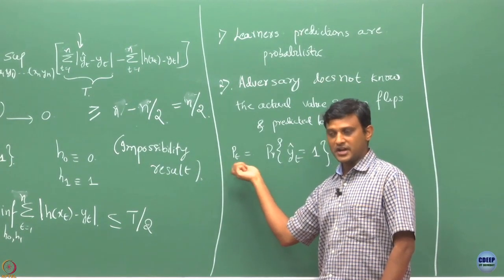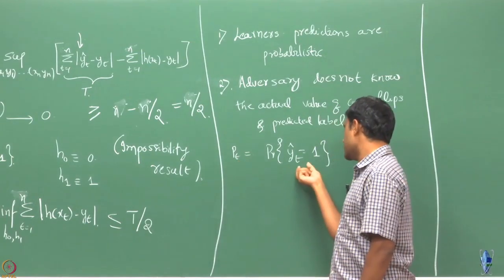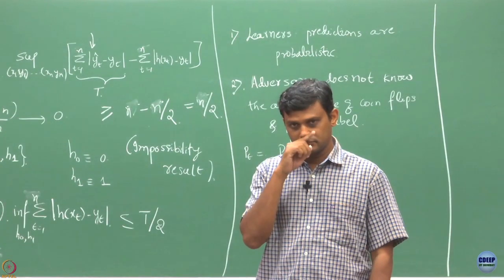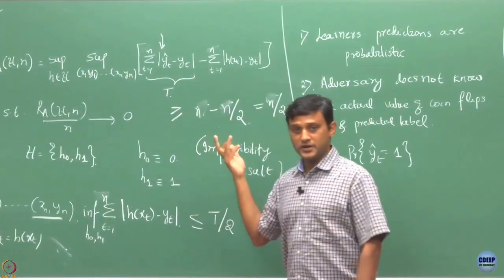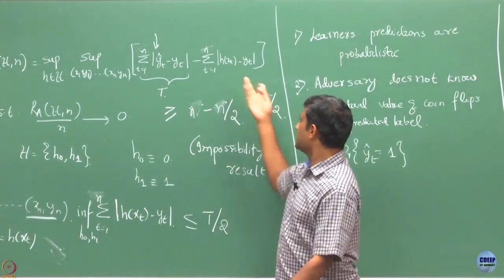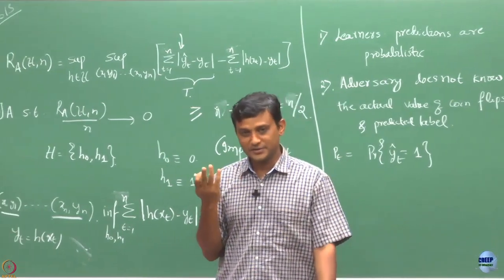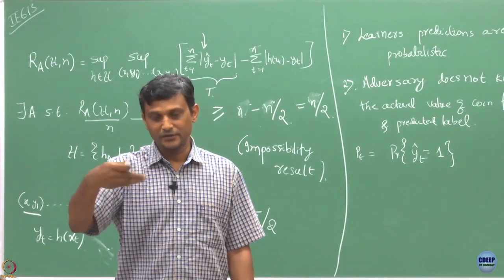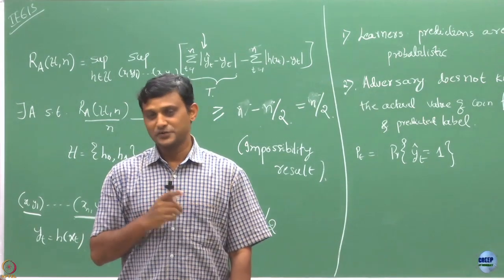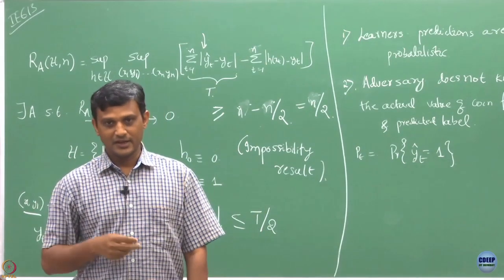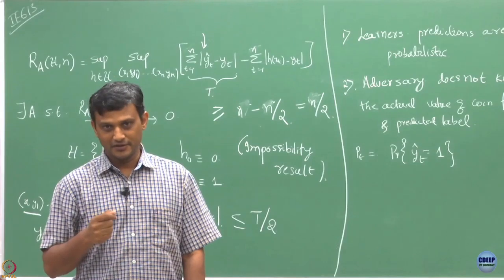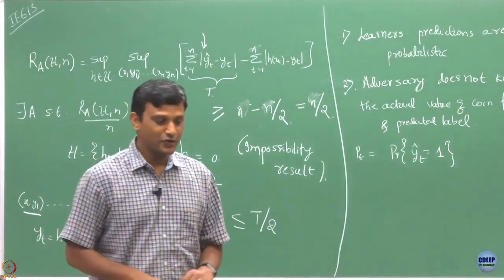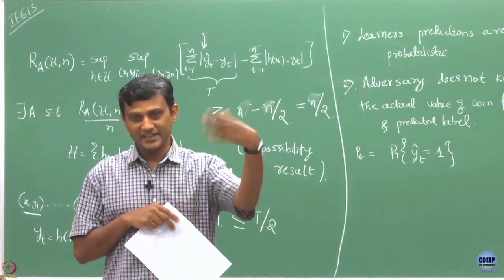In each round the learner comes up with a probability pt with which he declares the label to be 1. What we care about is: if maybe the environment is completely random, and you also do random things, and you somehow figure out that randomness, you are now doing as good as the environment. For example, if the adversary is declaring label 1 with probability one-half and 0 with probability one-half, and you also do that — do you think you will be able to do better? You have basically understood what the adversary is doing — you have learned the environment.